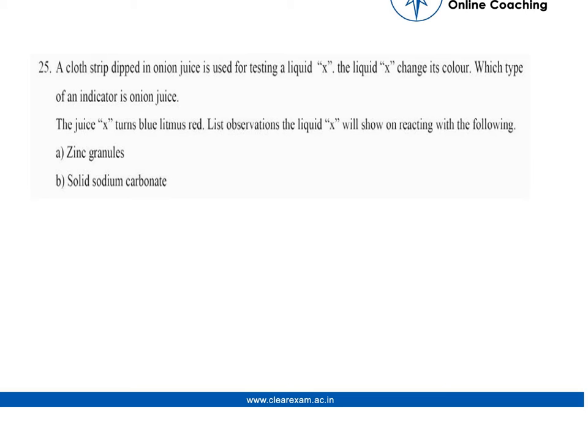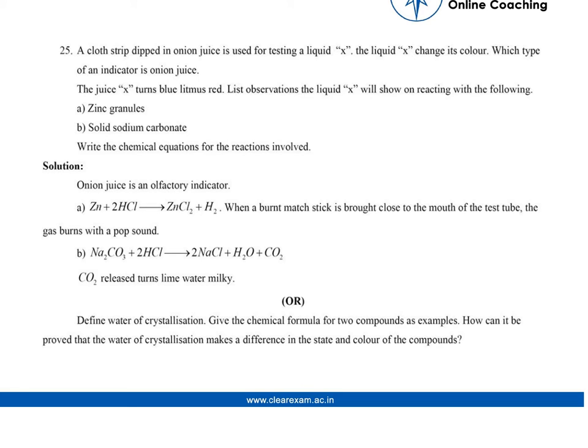Yeah, so we have read till here. The juice X turns blue litmus red. So remember, this will help you in solving the question. List observations the liquid X will show on reacting with the following: zinc granules, sodium carbonate. Write the chemical equations for the reactions involved. So focus on this part also. Sometimes you forget to write the chemical equations, we just explain theoretically part A and B. So remember that this is also part.